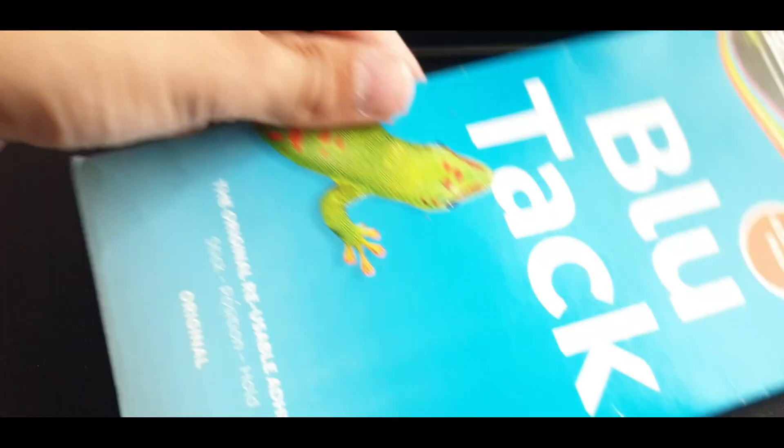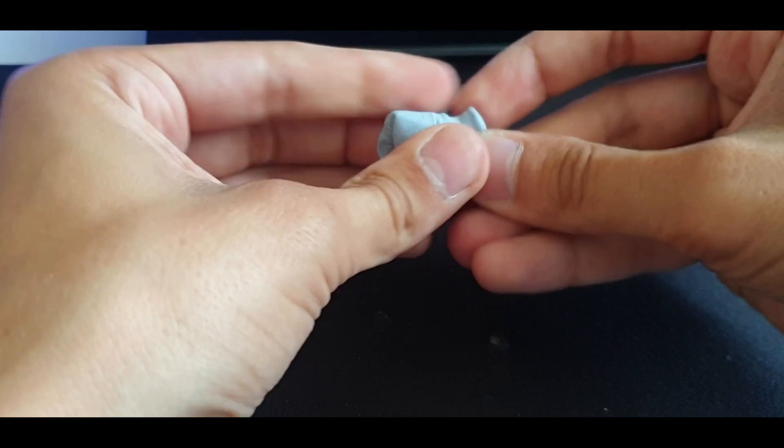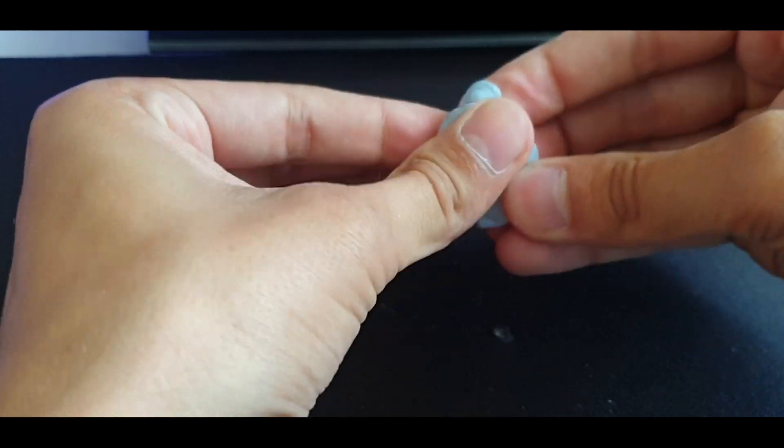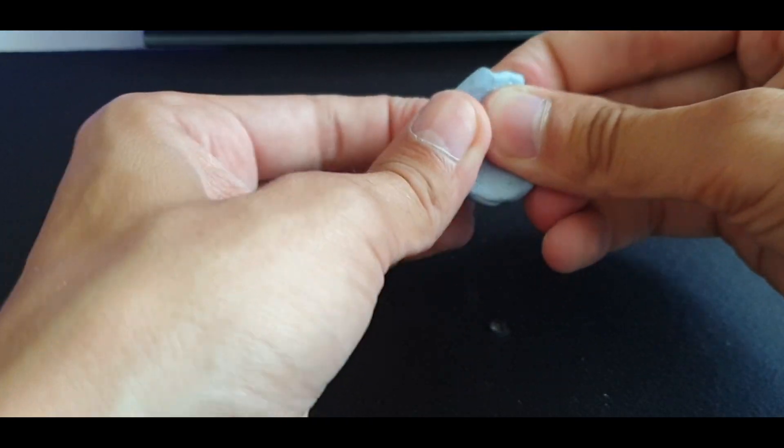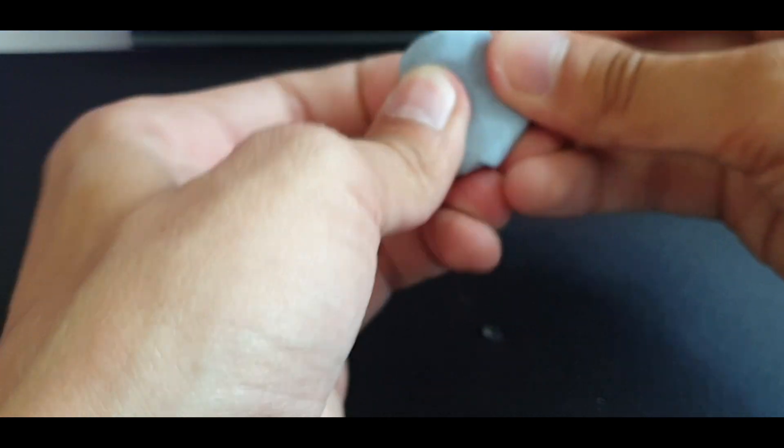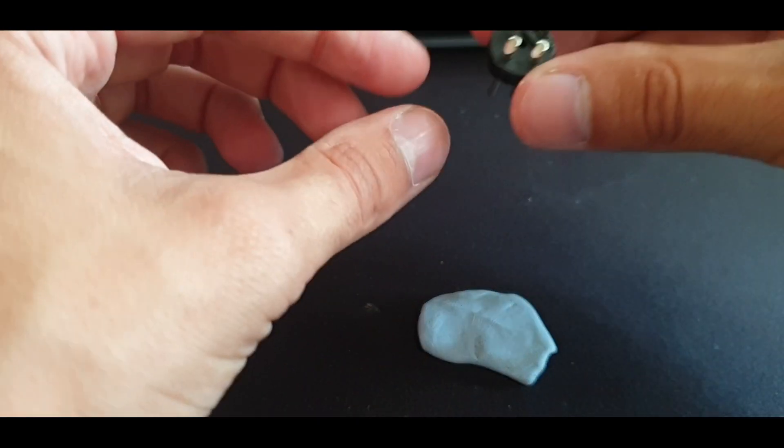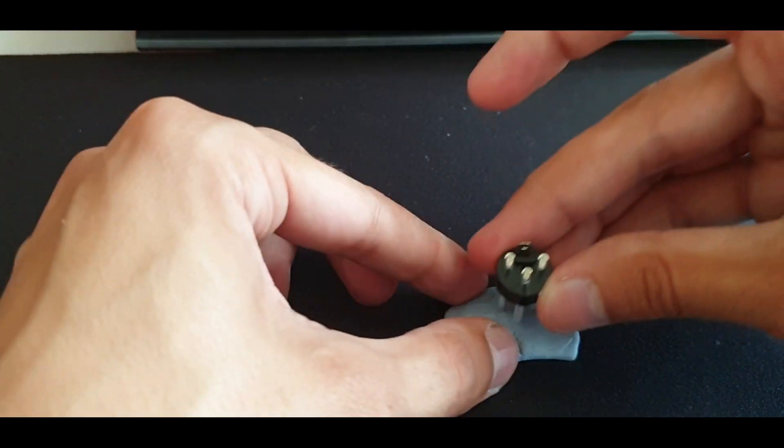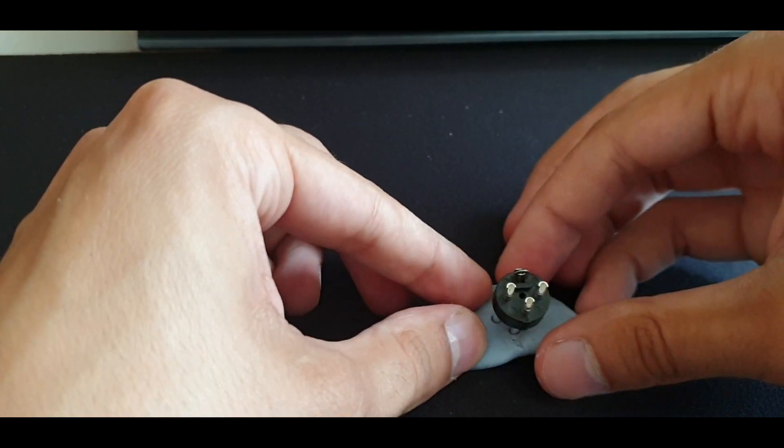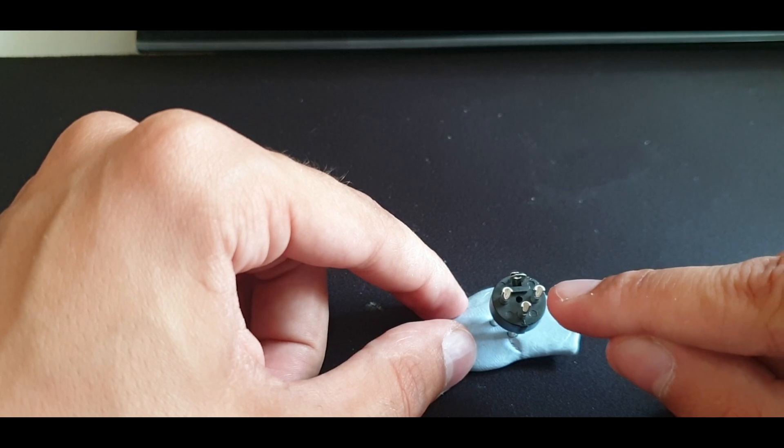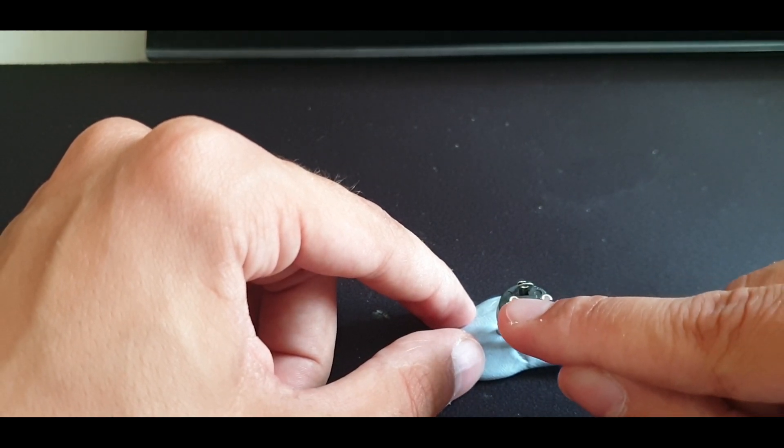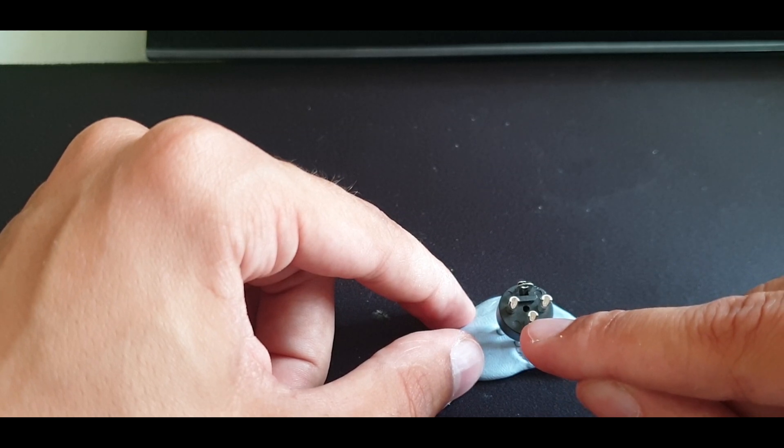Okay, so then the next step is to grab your trusted Blu-Tack. You just want to grab a little ball and mold it. You don't need too much, but you just need enough to make a base so that the pins from the XLR plug don't fall while you're trying to complete the soldering process. And then I'm going to put the pins facing this way down. Here you have pin 1, here we have pin number 2, and down here we have pin number 3.